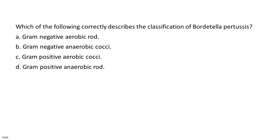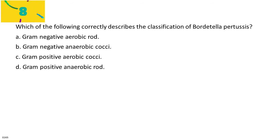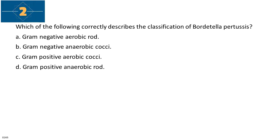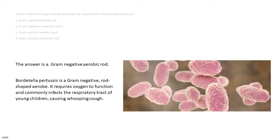Which of the following correctly describes the classification of Bordetella pertussis? A. Gram-negative, aerobic rod. B. Gram-negative, aerobic cocci. C. Gram-positive, aerobic cocci. D. Gram-positive, anaerobic rod. The answer is A. Gram-negative, aerobic rod. Bordetella pertussis is a gram-negative, rod-shaped aerobe. It requires oxygen to function and commonly infects the respiratory tract of young children, causing whooping cough.